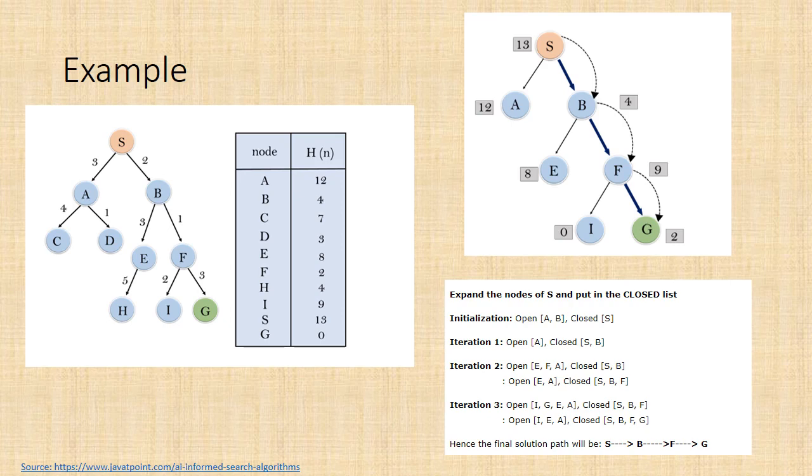At the start, expand the nodes of S and put in the closed list. We initialize the open list as A, B, and closed list as S. During the first iteration, open contains A, and closed contains S, B. Since node B has the lowest value, we expand it. In the second iteration, open contains E, F, A, and we place B in closed.